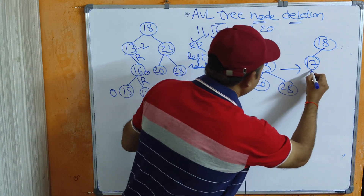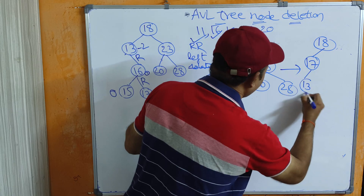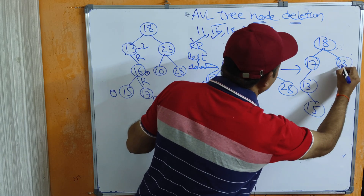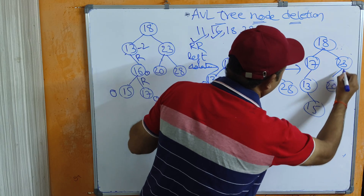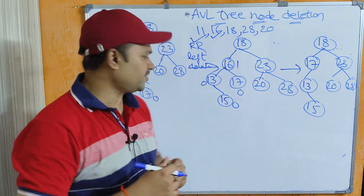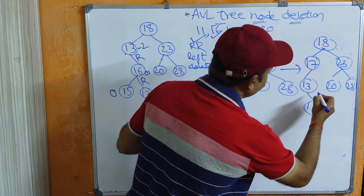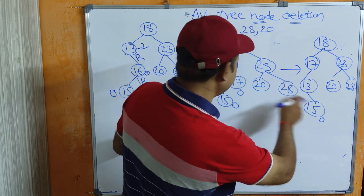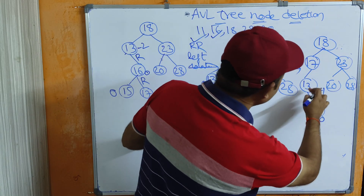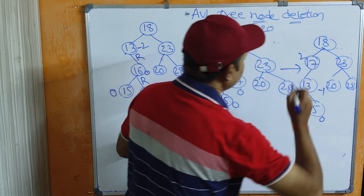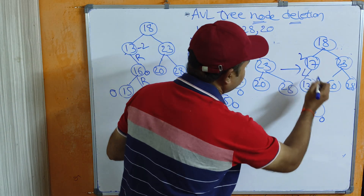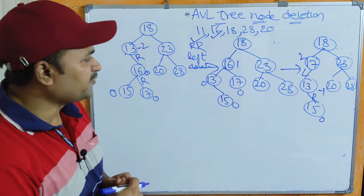After replacing 16 with 17, the remaining structure is: 17's left child is 13, and 13's right child is 15. There is no change in the right subtree — 23, 20, 28. Now calculate balance factors. For 13: 0 minus 1 equals -1. For 17: left subtree height is 2, right subtree height is 0, so 2 minus 0 equals 2. Node 17 is an unbalanced node. This is L on the left and R on the right, so we have to perform LR rotation.